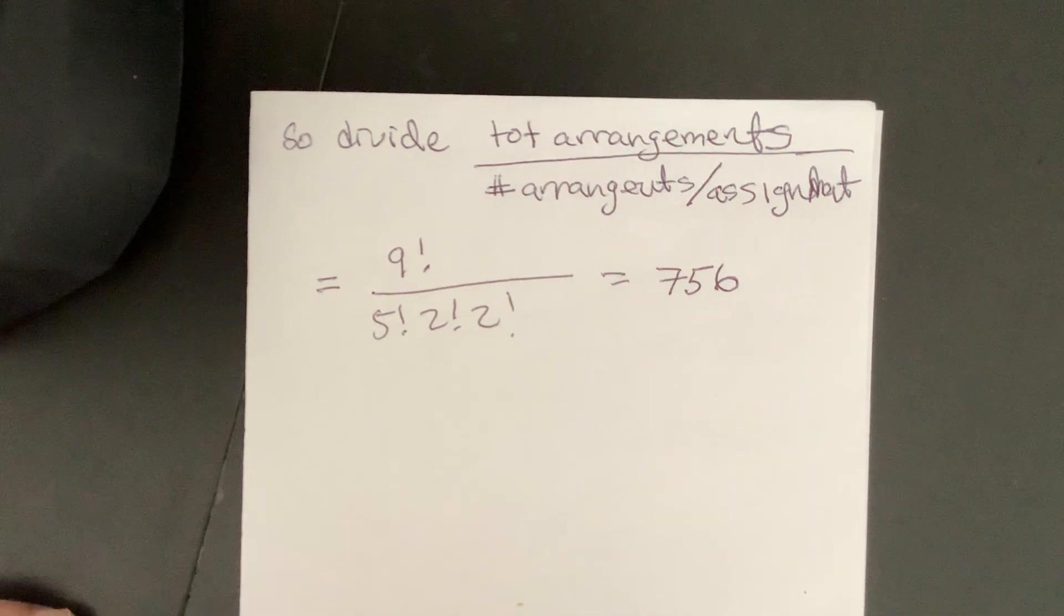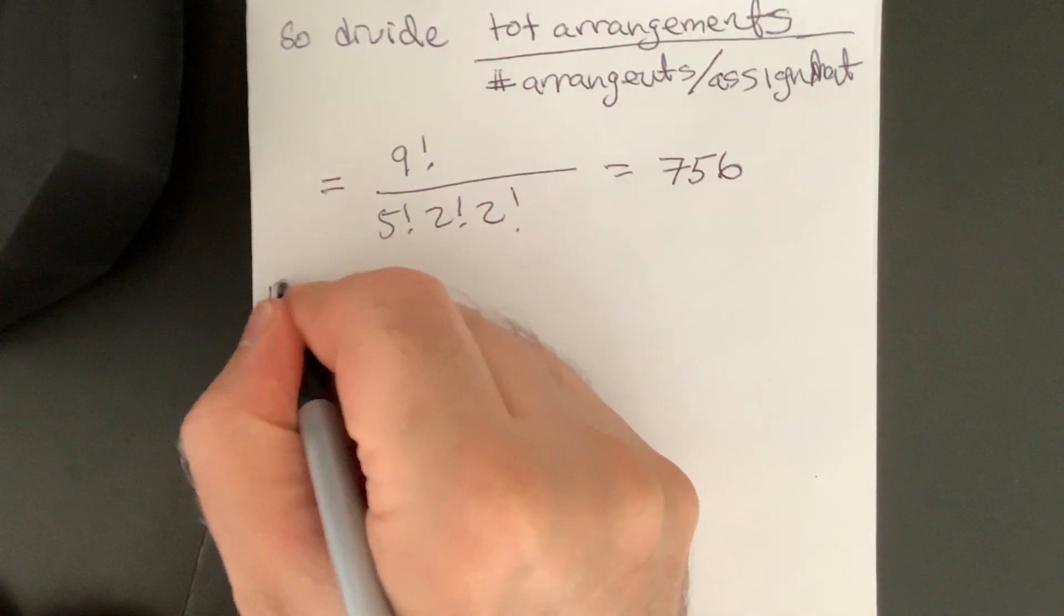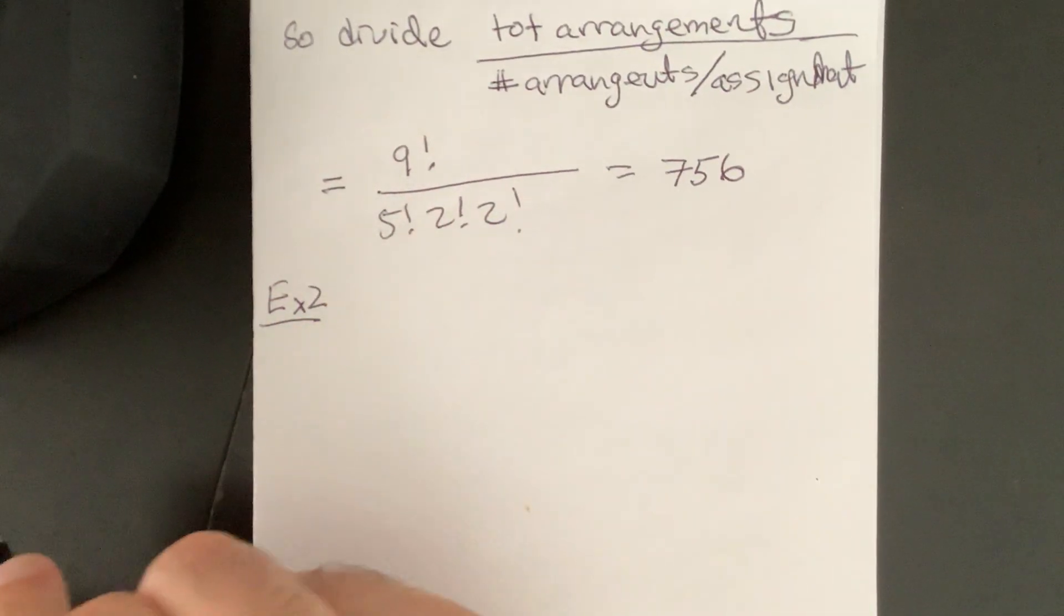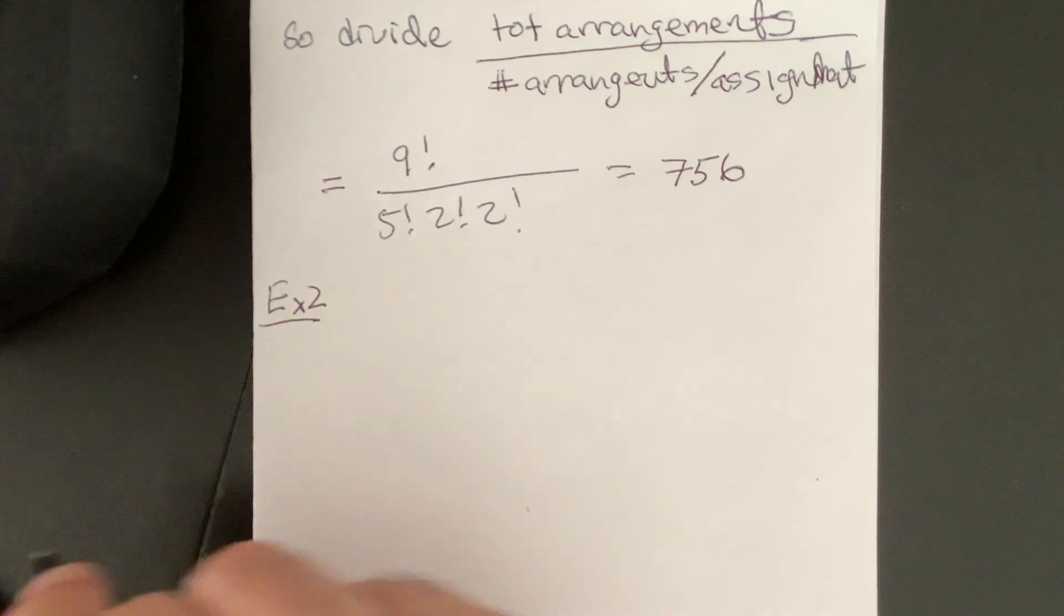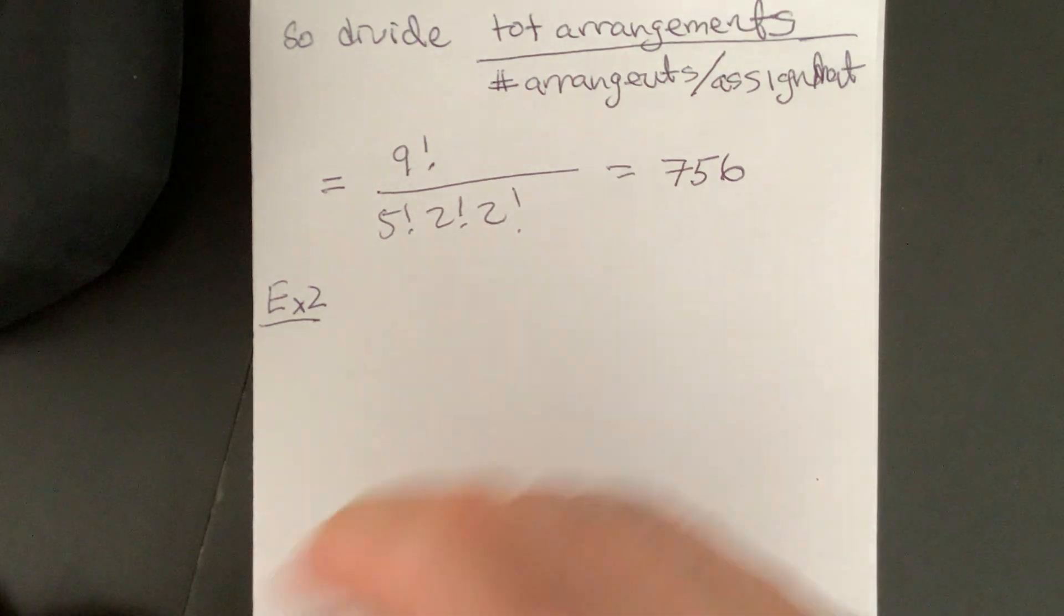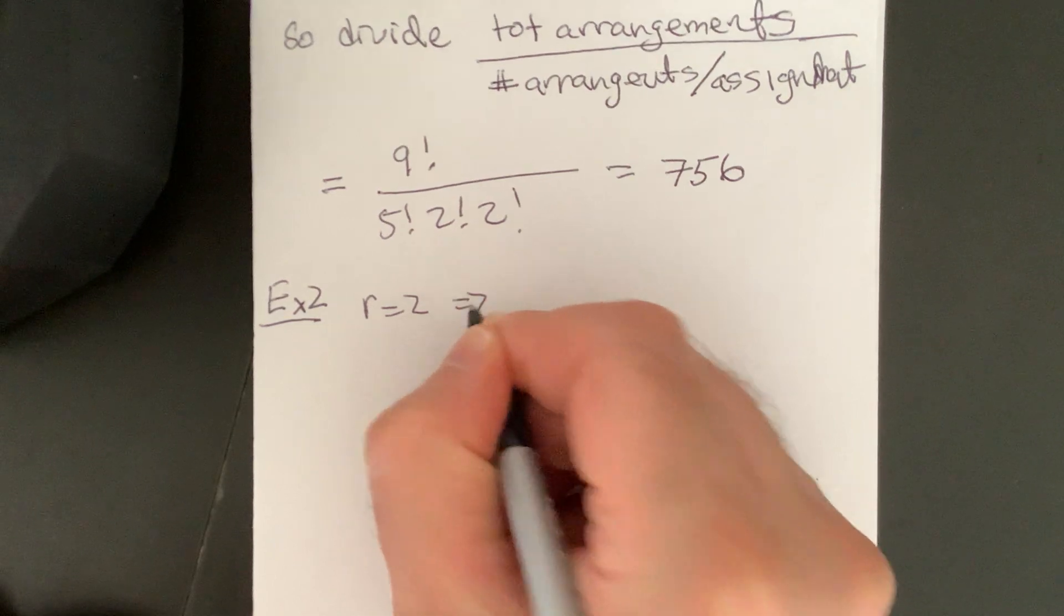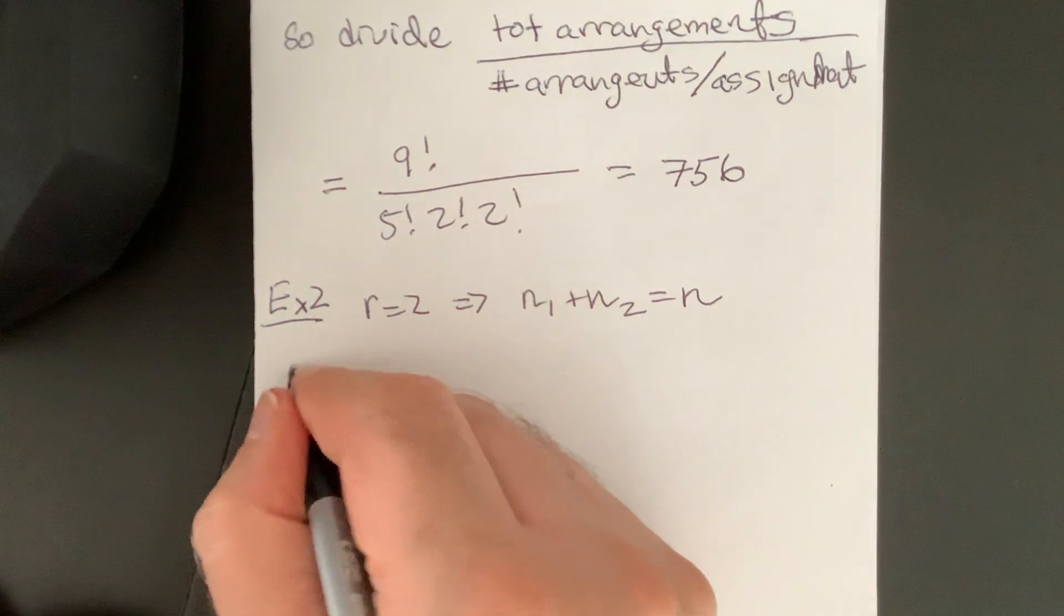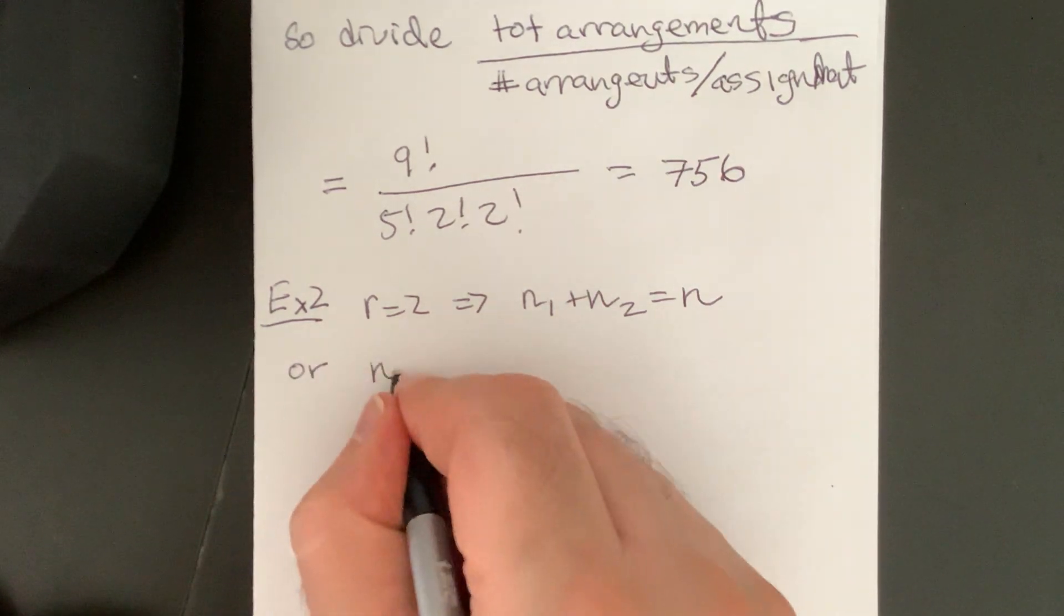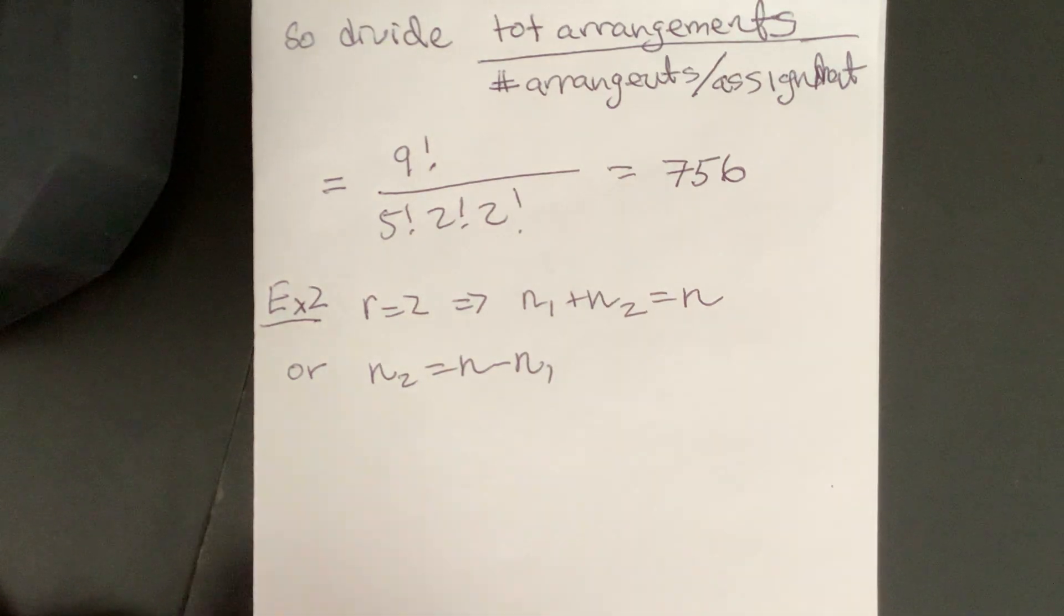All right. So, let's just check. Now, suppose I have an example 2. Suppose we want, let's say r is 2. R is 2. Then that implies that n1 plus n2 equals n, or even n2 equals n minus n1.